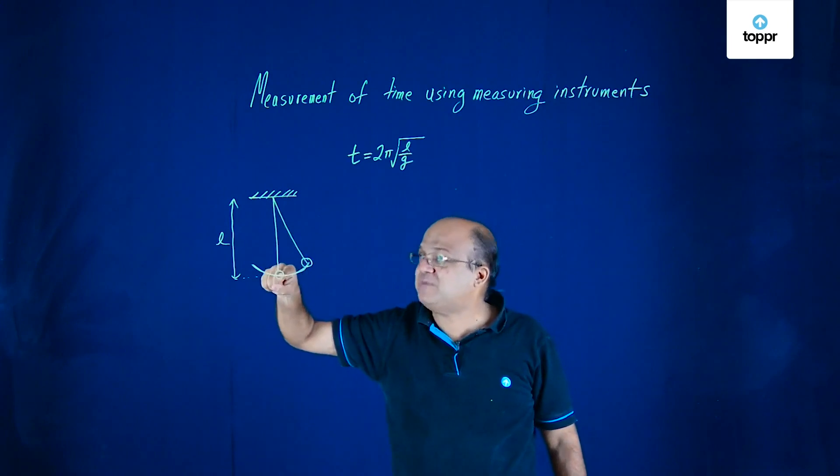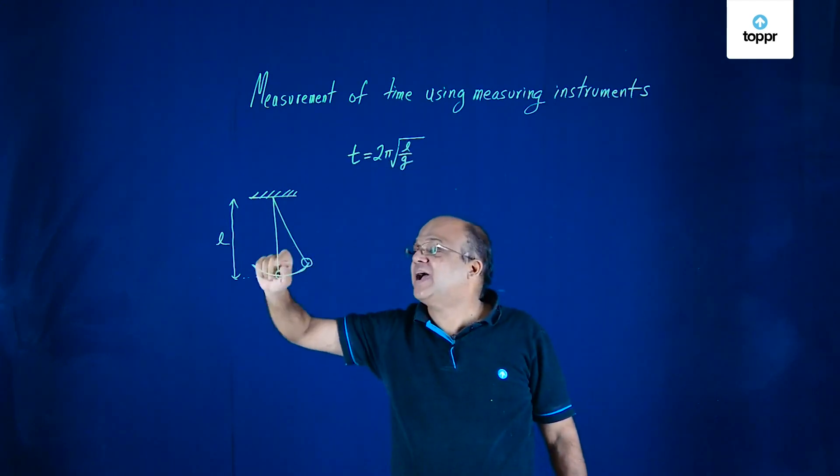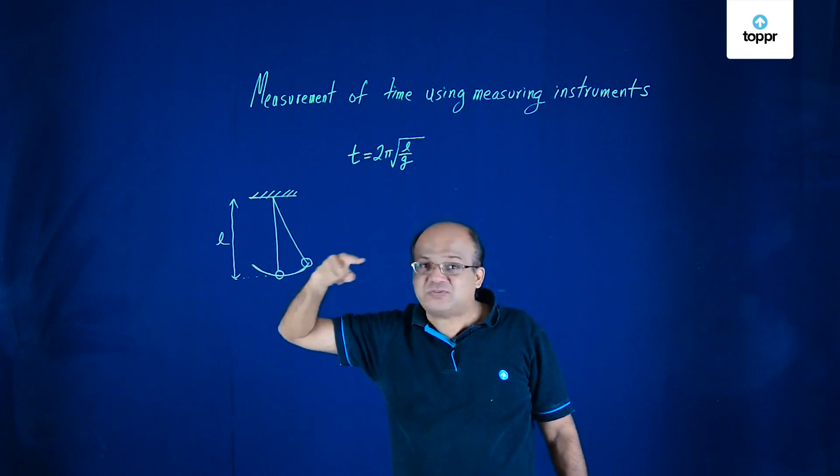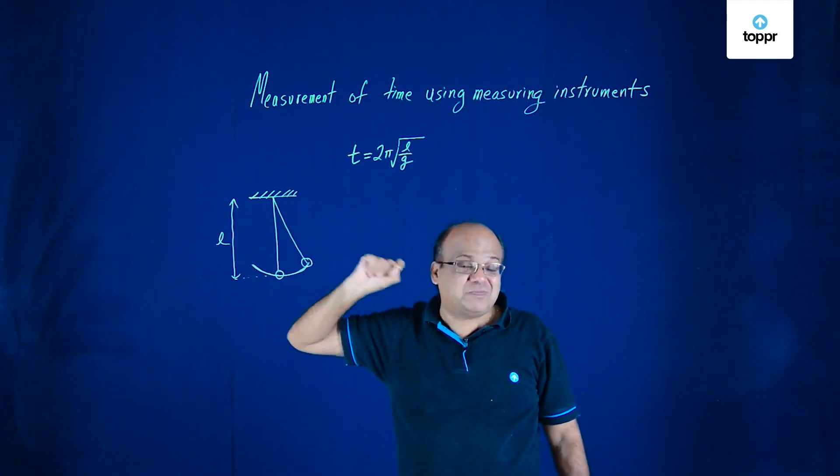So you've got a one meter pendulum, put that l as one, and then you'll find that the time period is two seconds and that is called seconds pendulum.